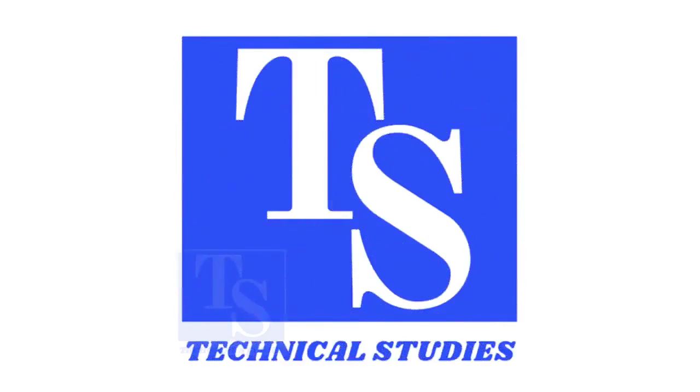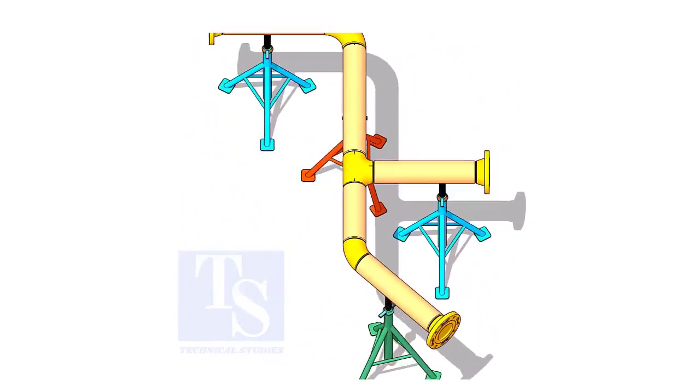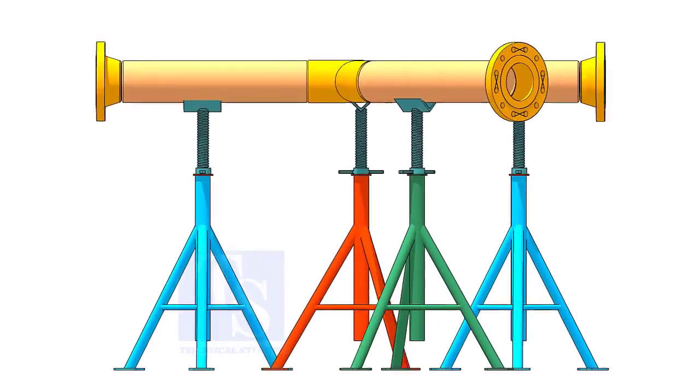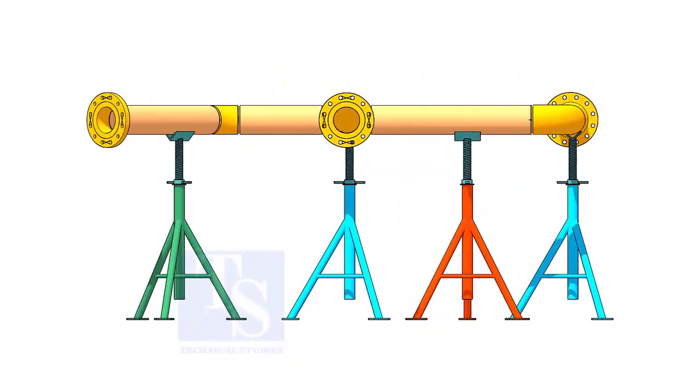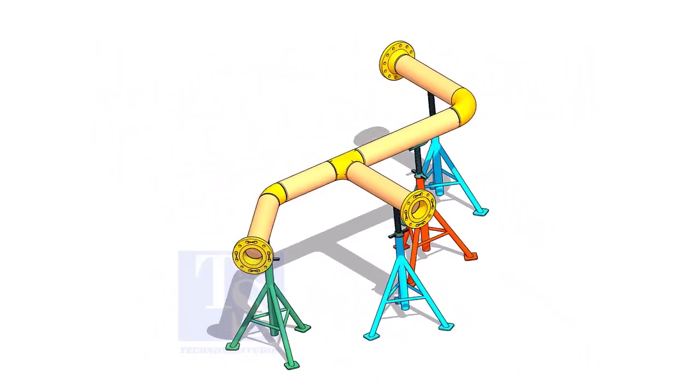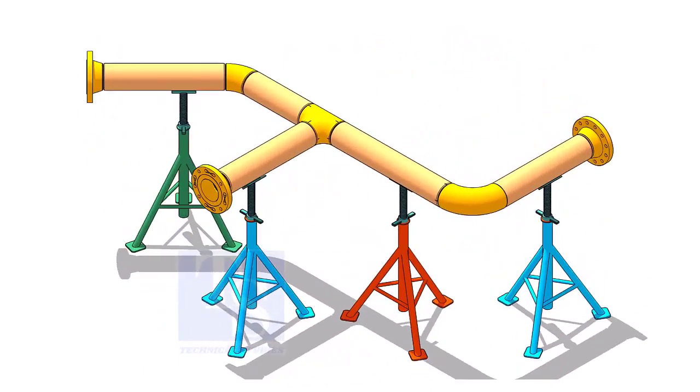Welcome to Technical Studies. If you get an isometric drawing for fabrication, what you will do first? I am sure you will check what is the size of the pipe, then the pipe schedule, flange class, etc.